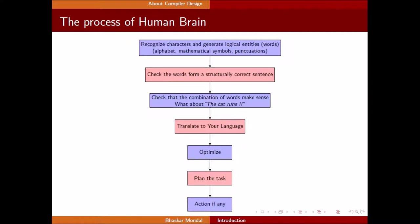Now what happens in our brain when we listen to or read some sentence. We recognize the characters and generate logical entities or words. Like in previous sentence, C-A-T together becomes cat. It may be alphabetical, it may be mathematical symbol, it may be some punctuation. Next, once we recognize it, check the words for structurally correct sentence - whether the words we have read are in correct sequence or not. If yes, check the combination of words makes sense. The cat runs - it makes some sense. But if I say the cat flies, no, the cat can't fly. It doesn't make any sense.